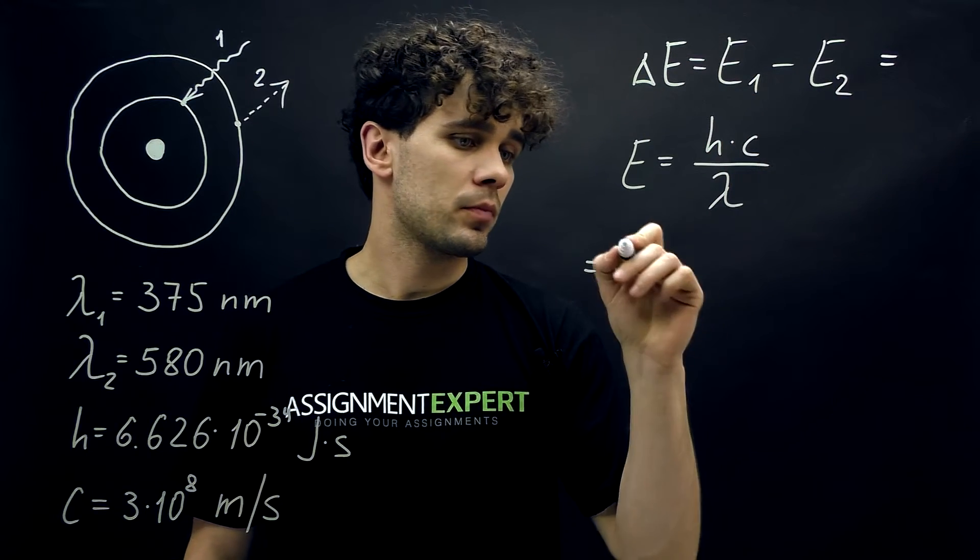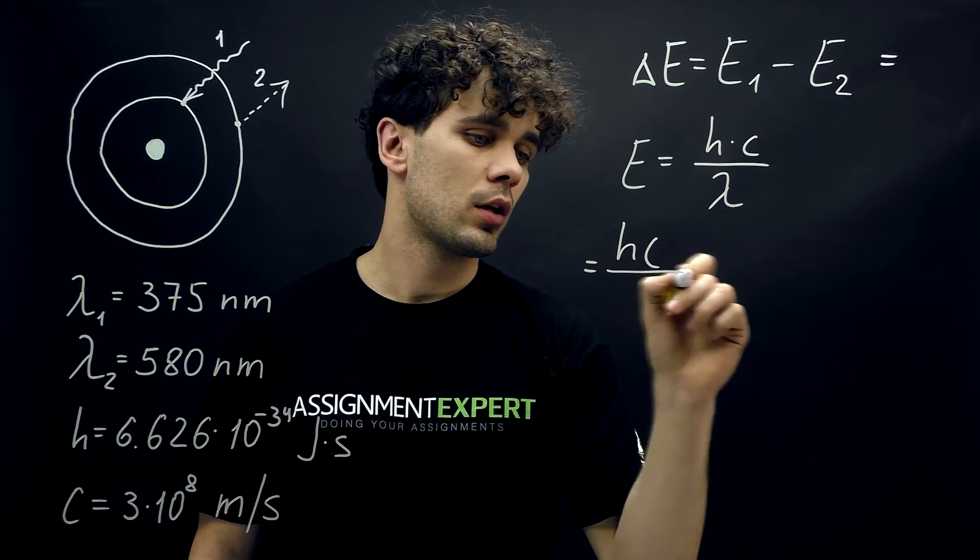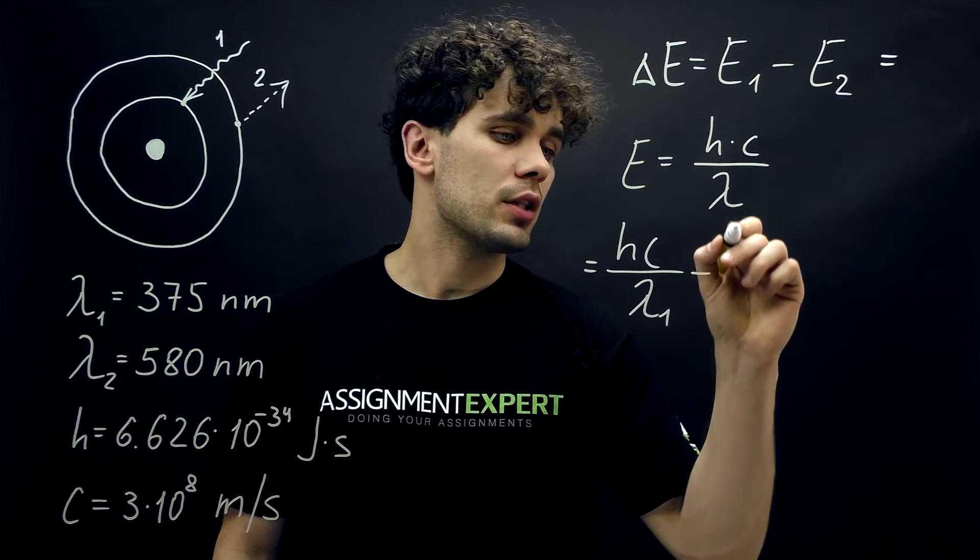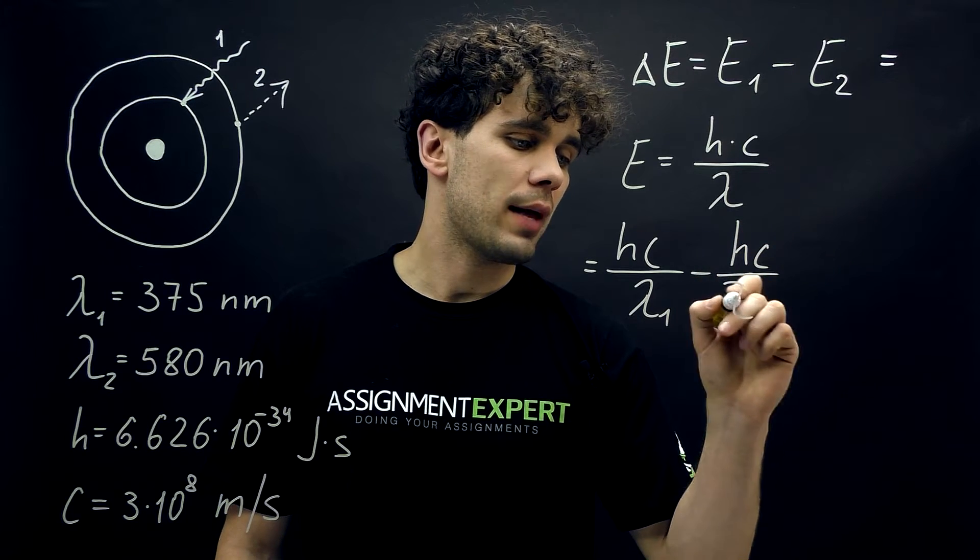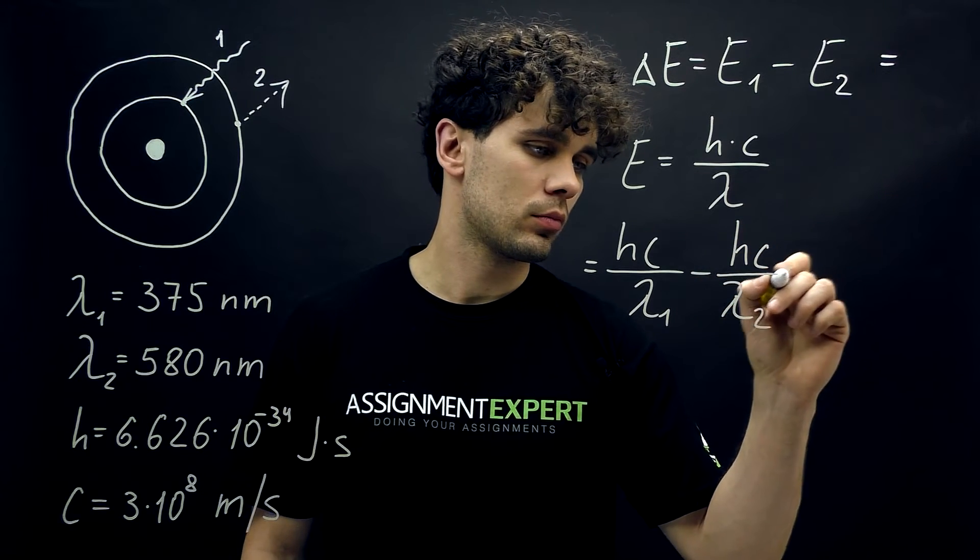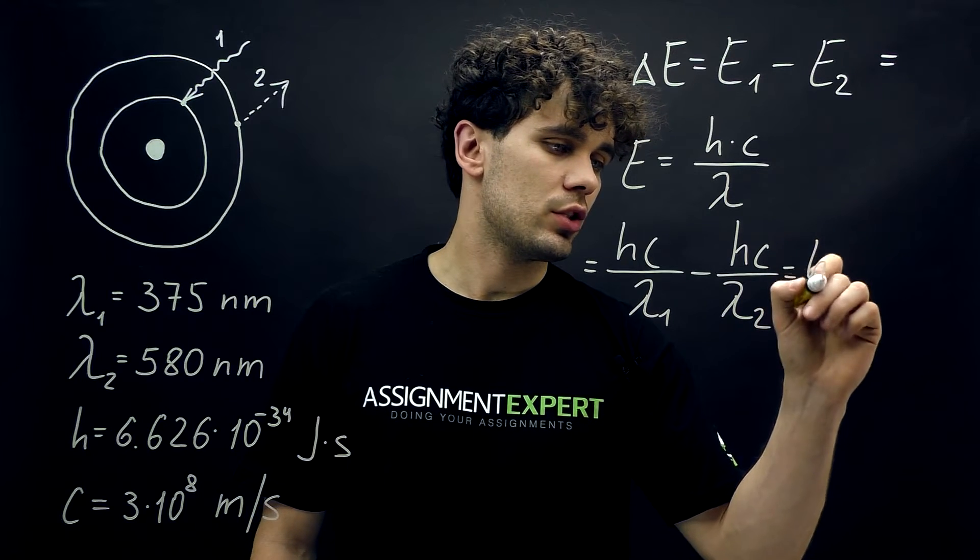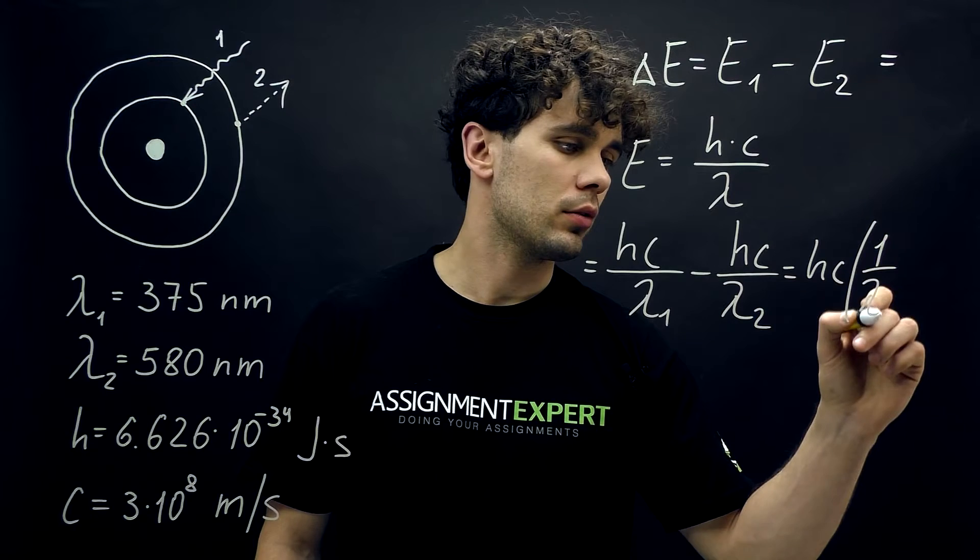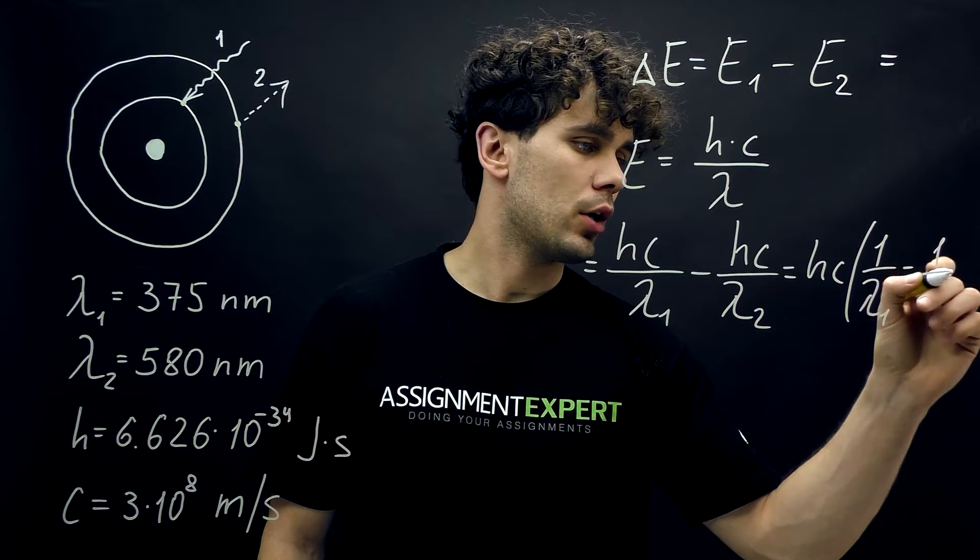Using this formula we can rewrite the first one, and it gives us hc over lambda 1 minus hc over lambda 2, or this is hc times 1 over lambda 1 minus 1 over lambda 2.